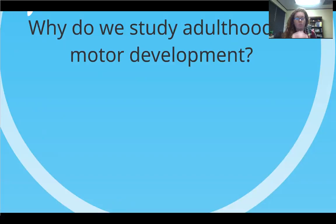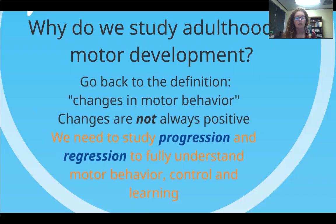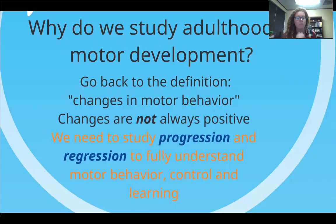We learned the definition: it's changes in motor behavior across the lifespan. So that second part of the definition — across the lifespan — tells us that we need to look at motor development from birth to old age. And in the first part of the definition, it says we're looking at changes in motor behavior. Changes doesn't have a positive or negative connotation, so changes are not always good. Some changes are bad. As we age, we have changes in our motor behavior that can be negative. So we need to look at both ends of the spectrum to really understand motor behavior, motor control, and motor learning.